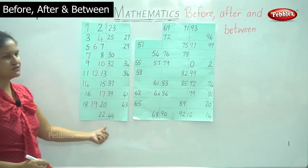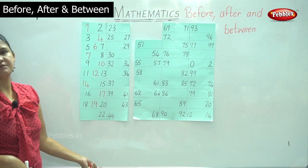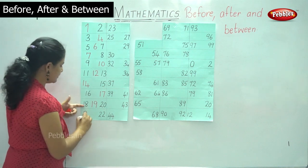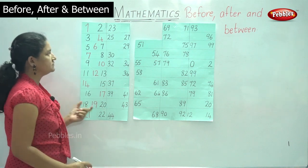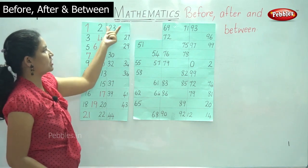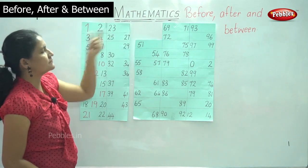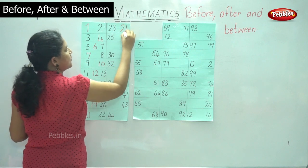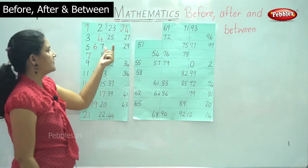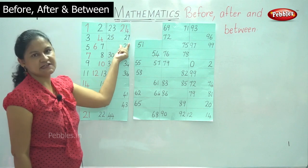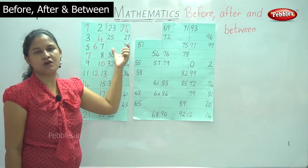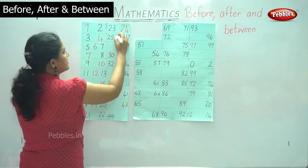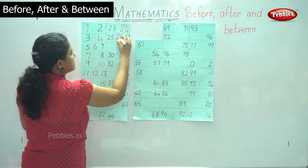Then we have number twenty-two, and what comes before number twenty-two? It is number twenty-one. Then we have twenty-three, and what comes after twenty-three? It is number twenty-four. We have numbers twenty-five and twenty-seven, and what comes between twenty-five and twenty-seven is number twenty-six.